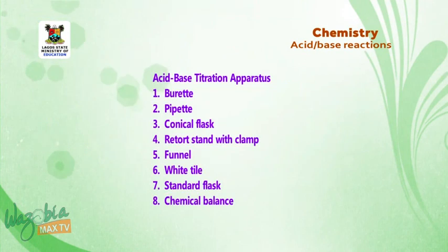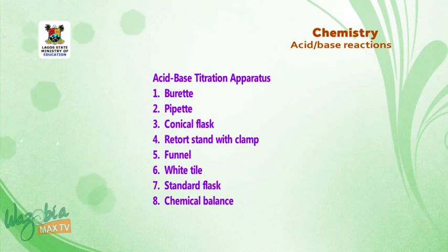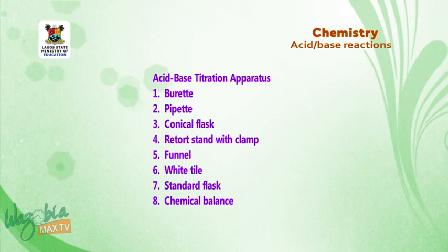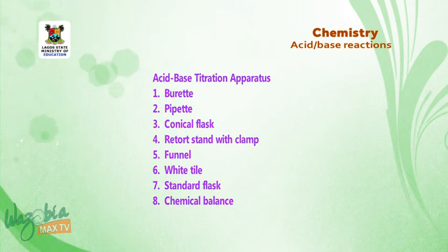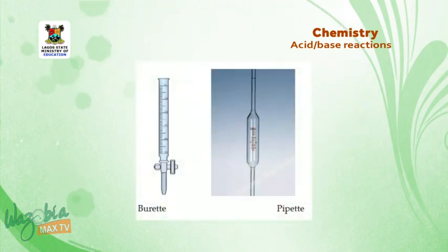The apparatus used in acid-base titration are: 1. Burette. 2. Pipette. 3. Conical flask. 4. Retort stand with clamp. 5. Funnel. 6. White tile. 7. Standard flask. 8. Chemical balance. The pictures of these apparatus are shown below.